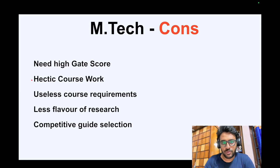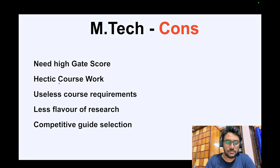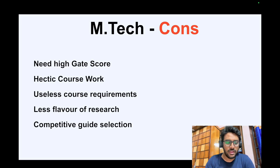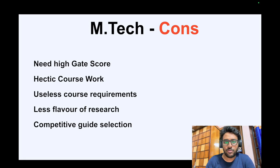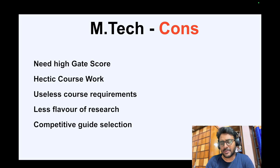The second disadvantage is the hectic coursework pressure. On average you have to do 10 to 12 courses. As I've mentioned in previous videos, the first two semesters of MTech are really tedious — you have to credit four to five courses per semester. Completing four to five courses in three or four months is really hectic, so the first couple of semesters will be very stressful for MTech students.